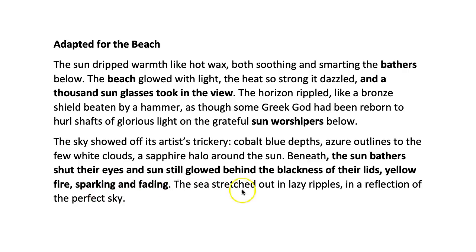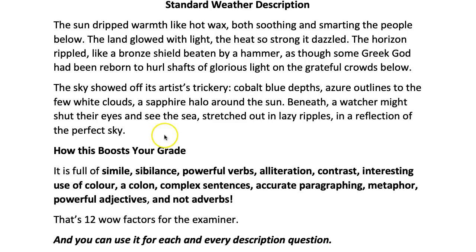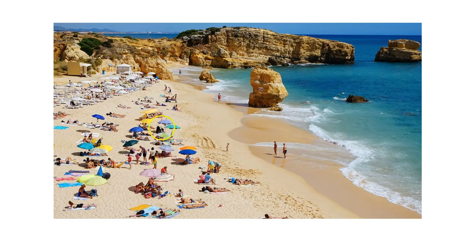The sea stretched out in lazy ripples in a reflection of the perfect sky. You can see it's not much longer than those two paragraphs were and it uses exactly the same language and sentence structure, but it's just been adapted to fit people on a beach. You might say, well, that's easy Mr. Salas — you chose the sunshine and you've got a picture of sunshine.